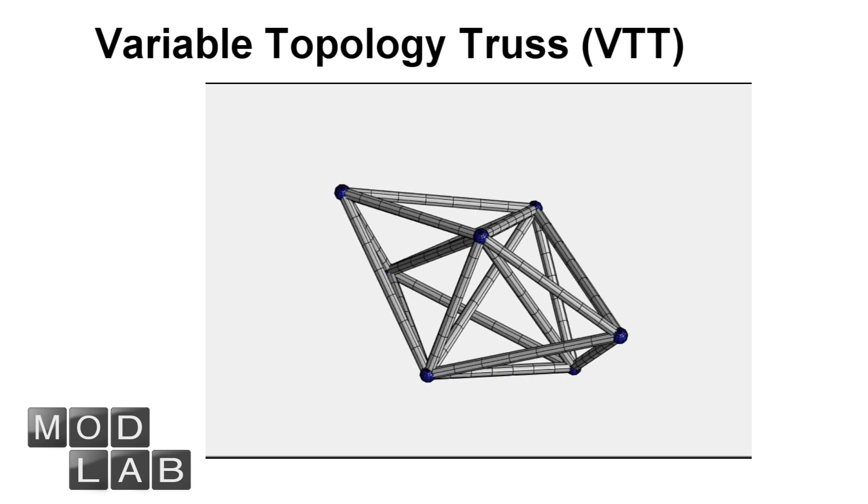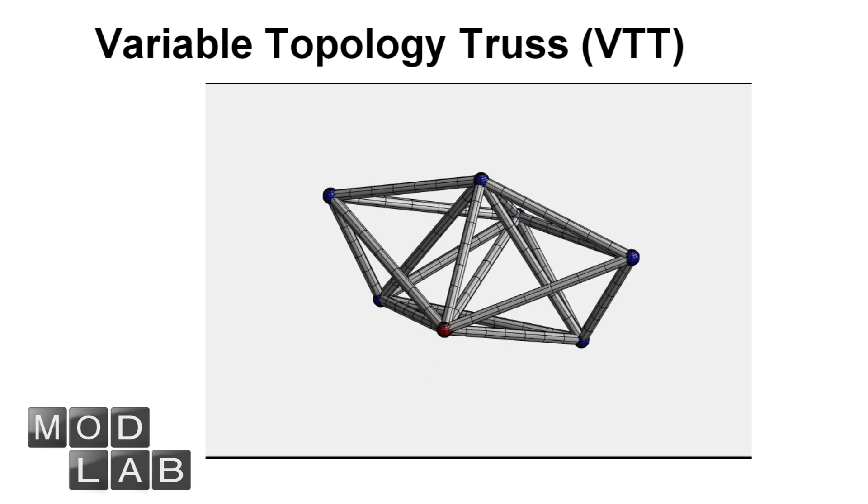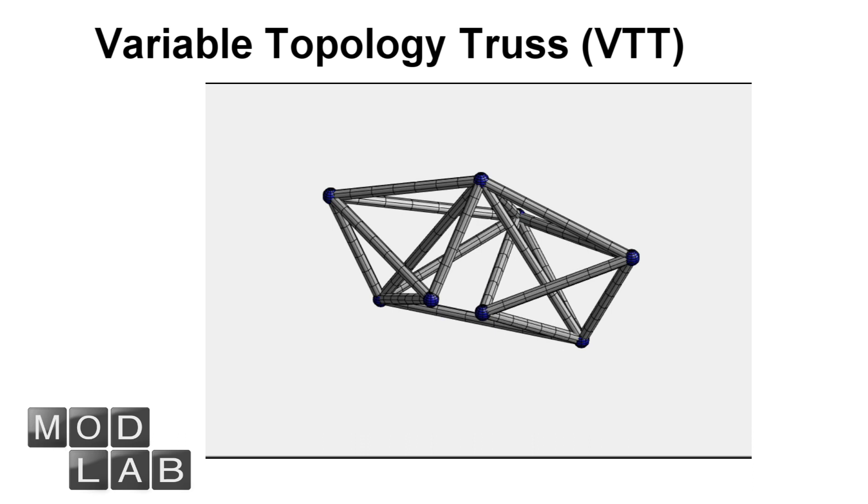Variable topology truss is a new class of modular robotic system. A VTT is composed of multiple linear activators for the truss members which are joined at the truss nodes by a special reconfigurable spherical joint.